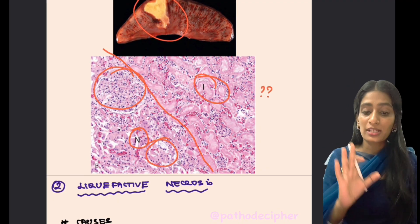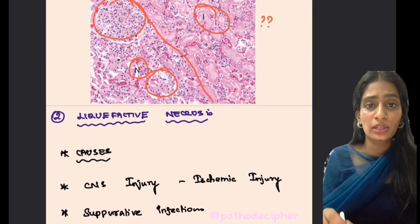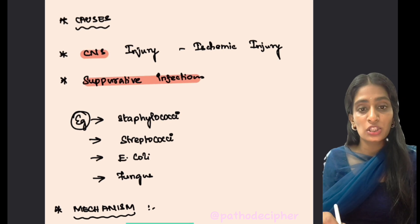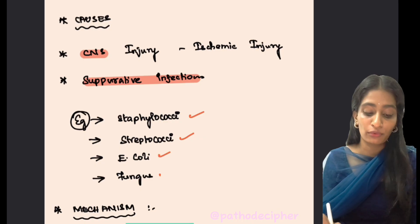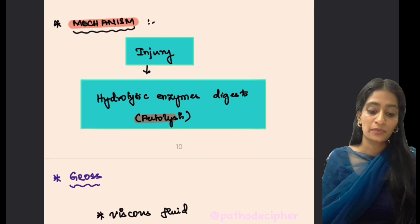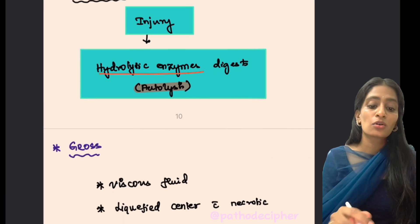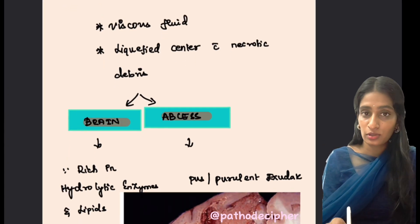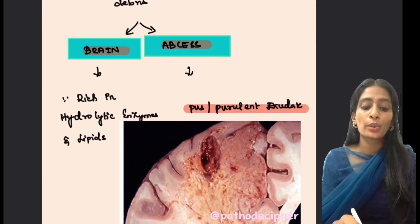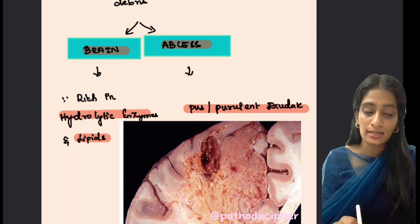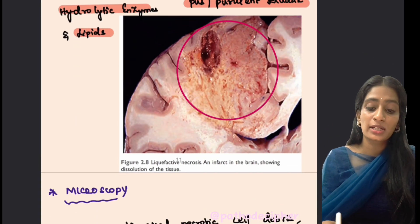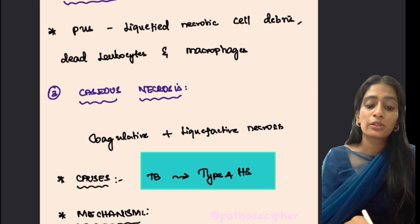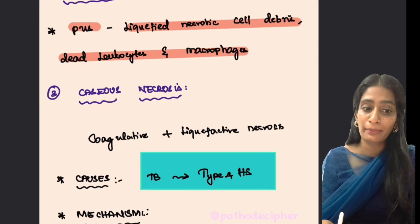Liquefactive necrosis most commonly affects the CNS, with abscess being the most common manifestation. Organisms responsible include Staphylococci, Streptococci, E. coli, and fungi. The mechanism is autolysis by hydrolytic enzymes. Grossly it appears as viscous fluid with a liquefied center and necrotic debris — seen in brain and abscess. An abscess appears as purulent exudate, while in the brain it is due to rich hydrolytic enzymes and lipids. Microscopically, liquefied necrotic cell debris, dead leukocytes, and macrophages are seen.